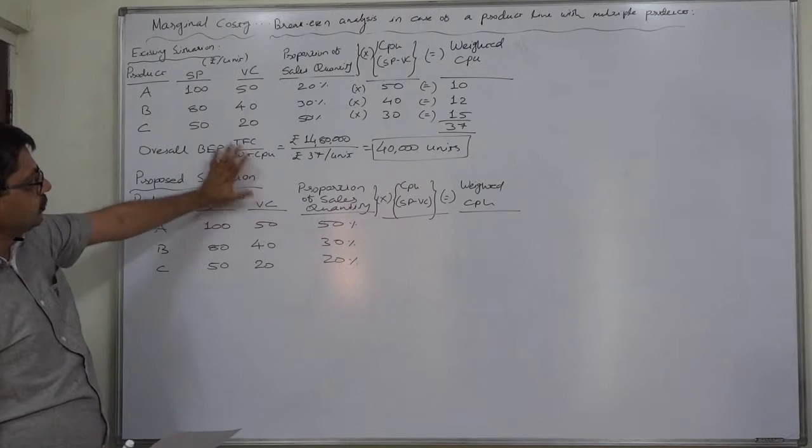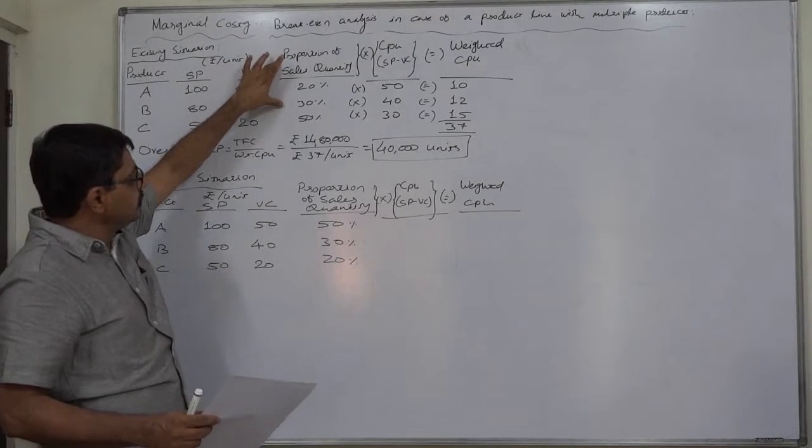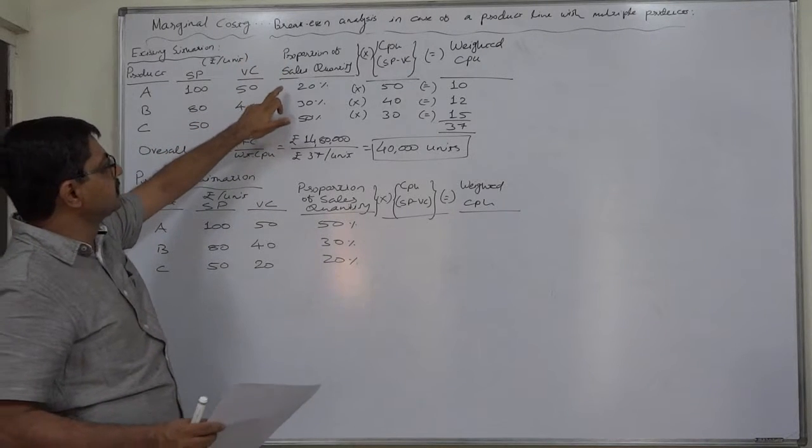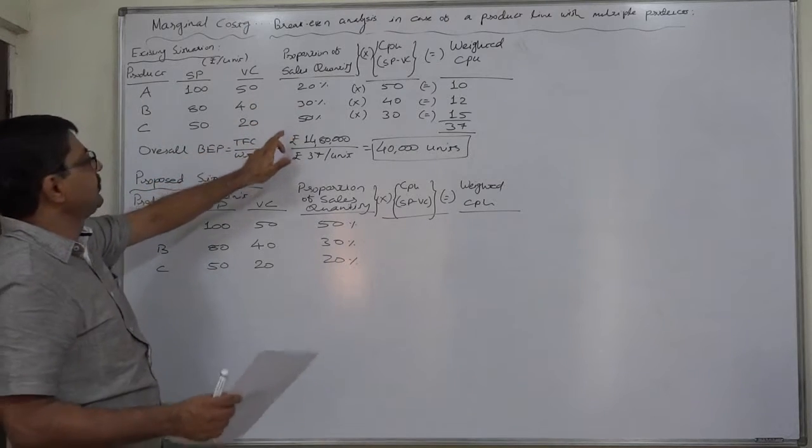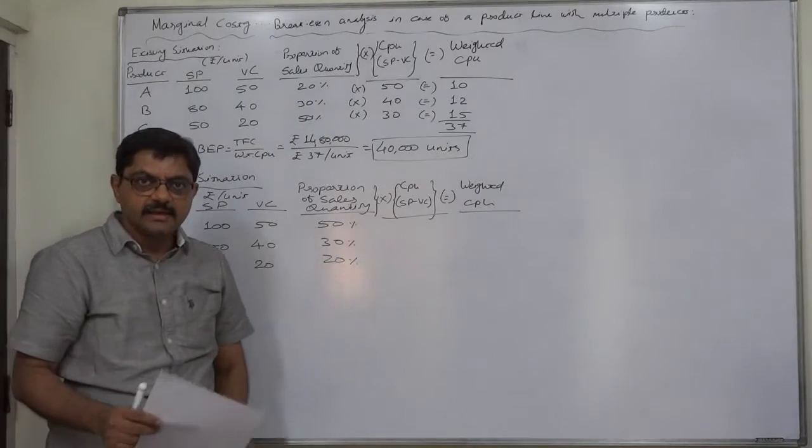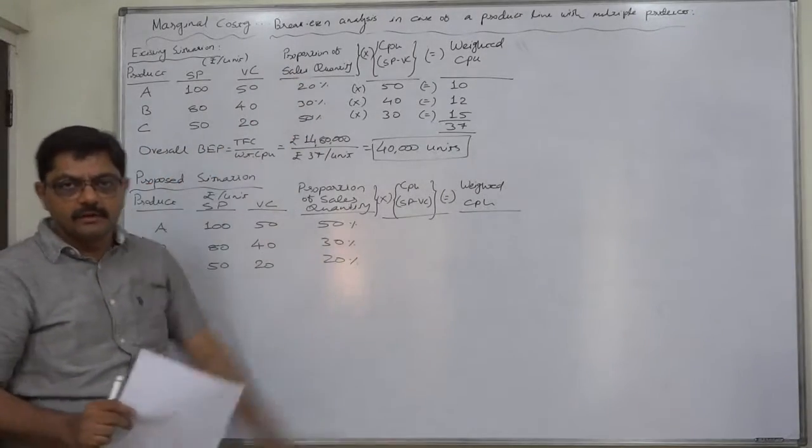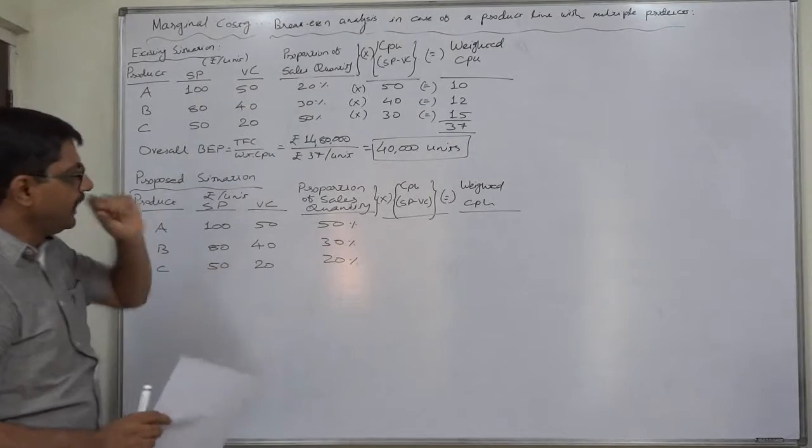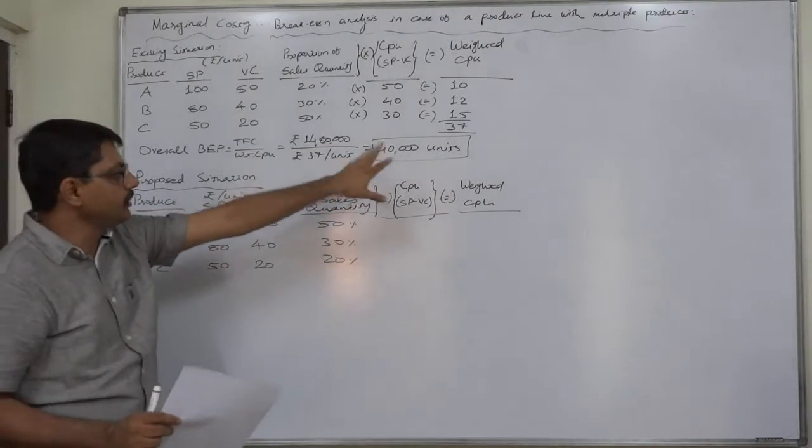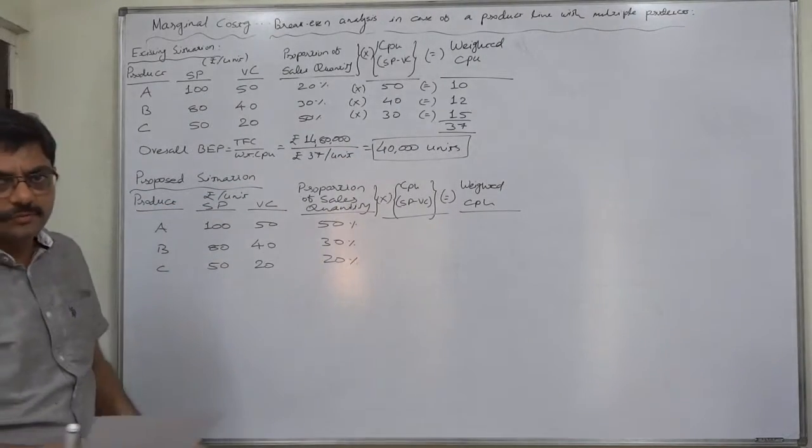According to the existing situation, the proportion or percentage of sales quantity is 20% A, 30% B, and 50% C. That means the share of each product in the total sales quantity of the firm is this one, and we calculated weighted contribution, overall BEP, and share of each product.